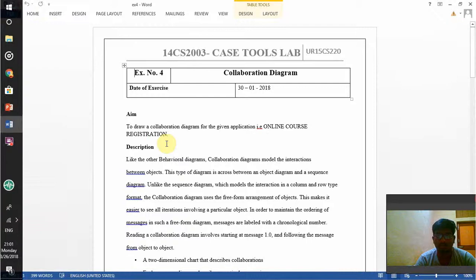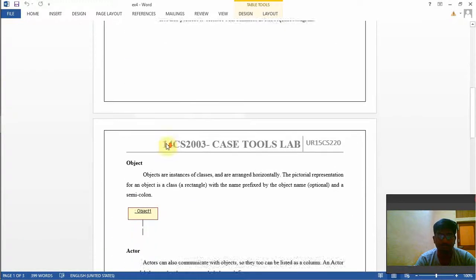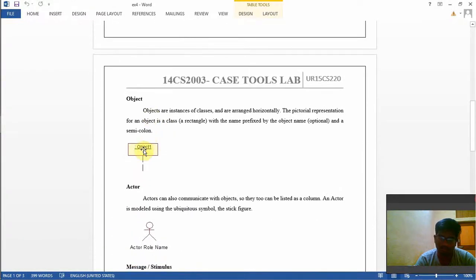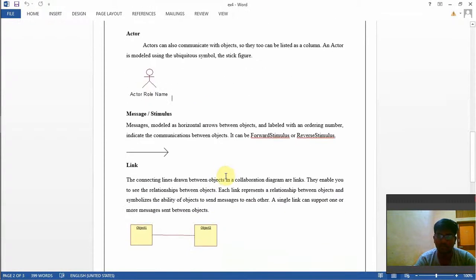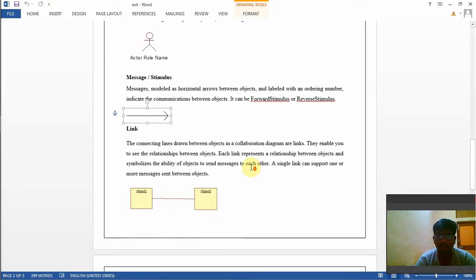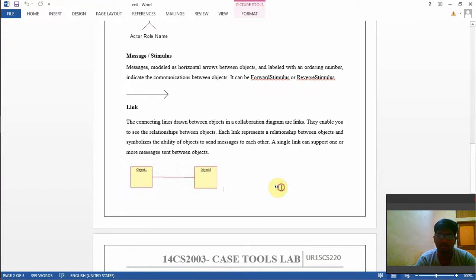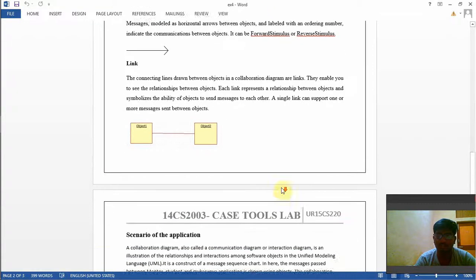An object is represented using a rectangle, a rectangular box. An actor can be represented with an actor box. The message or stimulus can be written on a forwarded stimulus or reverse stimulus, like an arrow mark. A link connects two or more objects.